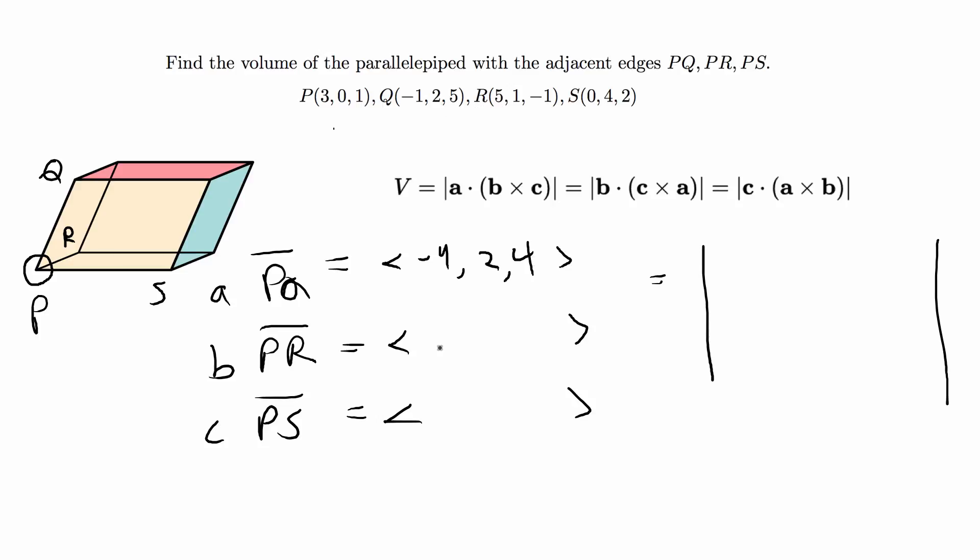For PR it's going to be 5 minus 3 which is 2. 1 minus 0 which is 1. -1 minus 1 which is -2. And then for PS it's going to be 0 minus 3 which is -3. 4 minus 0 which is 4. And 2 minus 1 which is 1.